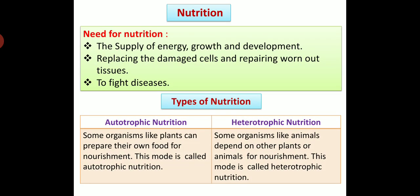There are two types of nutrition: autotrophic nutrition and heterotrophic nutrition. Autotrophic nutrition: Some organisms like green plants can prepare their own food for nourishment. This mode is called autotrophic nutrition. For example, all green plants are autotrophic.